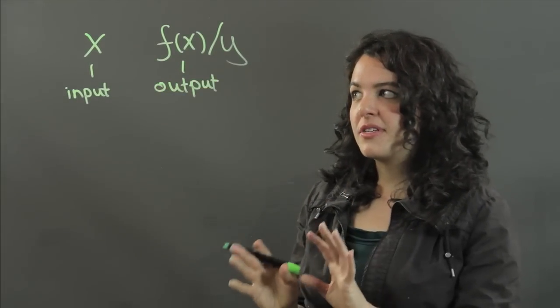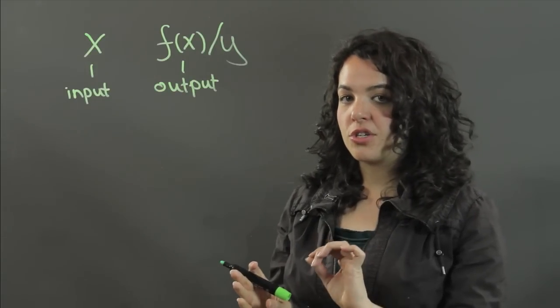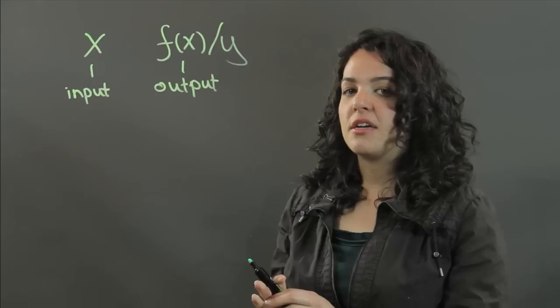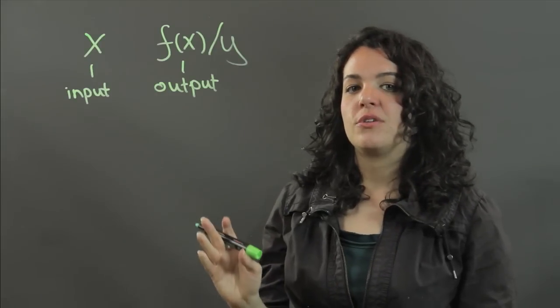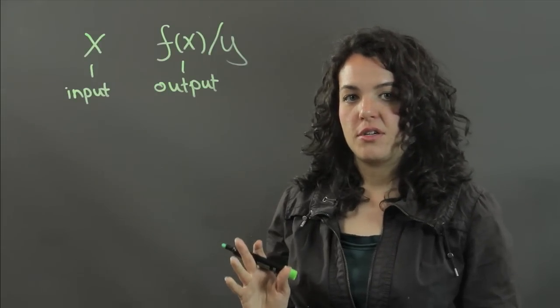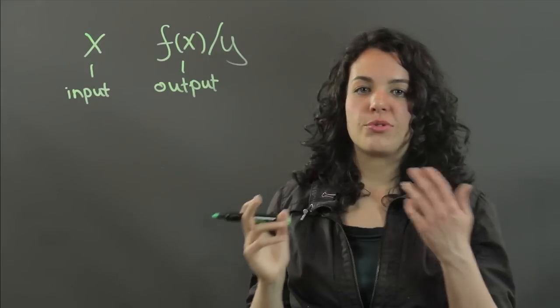So what this means is that for every x value in a function, you're going to get one specific value of f of x. You're not going to get two or three, just one.